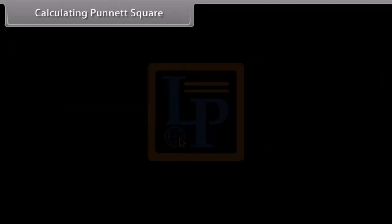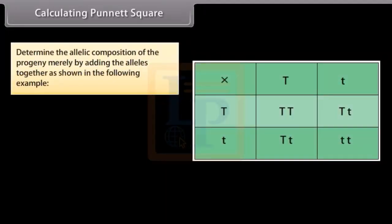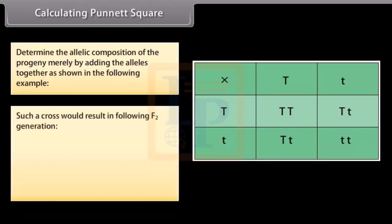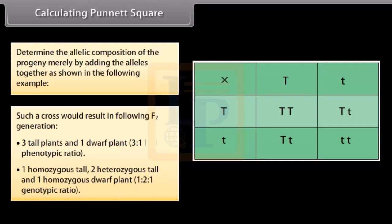Calculating Punnett square. Determine the allelic composition of the progeny merely by adding the alleles together as shown in the following example. Such a cross would result in following F2 generation: three tall plants and one dwarf plant, 3:1 phenotypic ratio. One homozygous tall, two heterozygous tall, and one homozygous dwarf plant, 1:2:1 genotypic ratio.